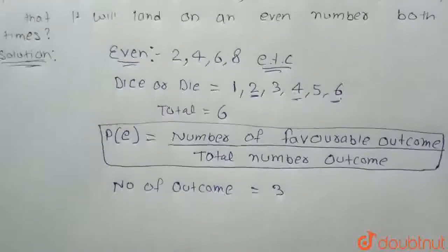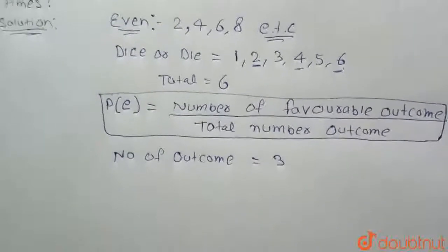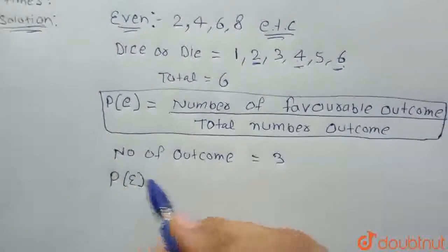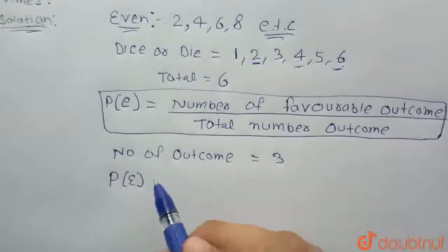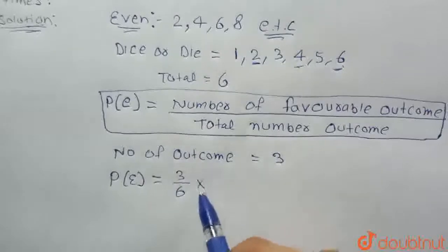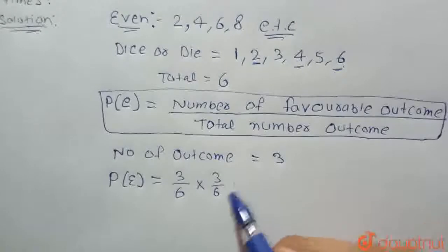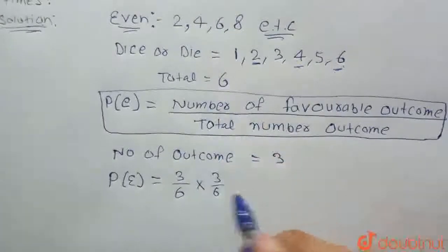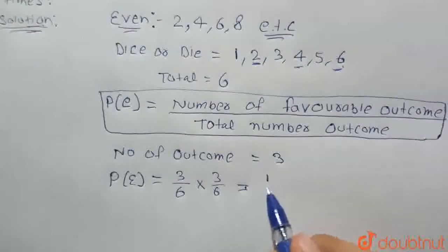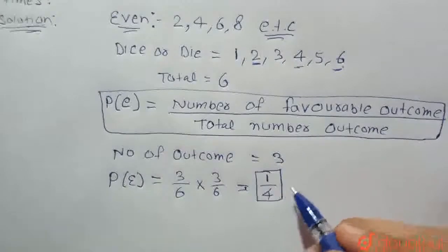We have total number of outcomes as 6 and number of favorable outcomes as 3. The probability that will land on an even number both times is 3/6 for the first time and 3/6 for the second time. When the dice is rolled twice, 3/6 multiply 3/6 equals 1/4.